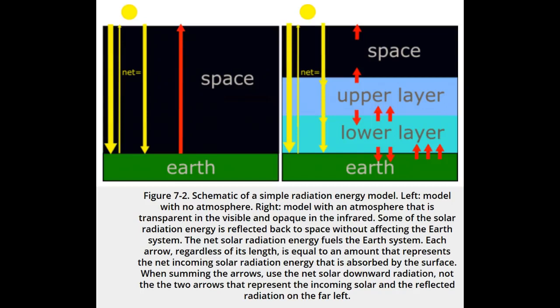In the simplest climate model, there is no atmosphere. Therefore, radiation is absorbed only by Earth's surface, and the atmosphere's emissivity is zero.